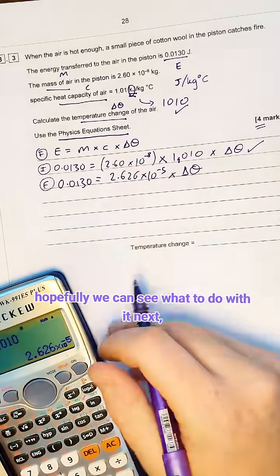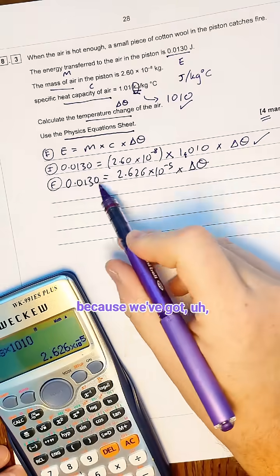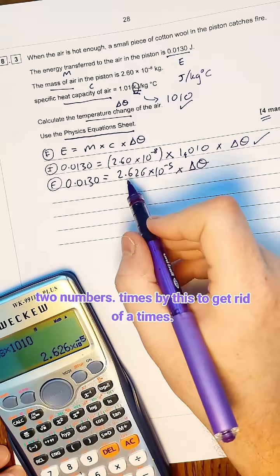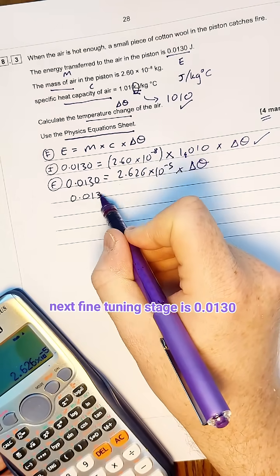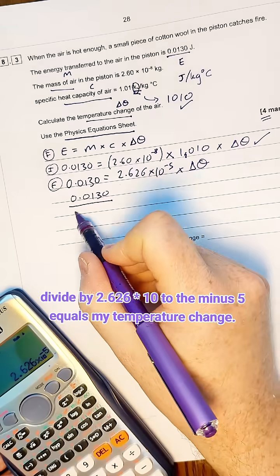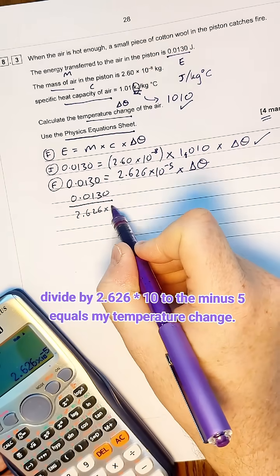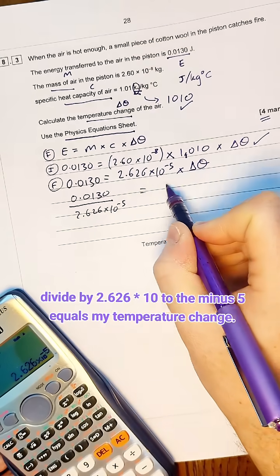Next, hopefully we can see what to do with it next because we've got two numbers times by this. To get rid of the times, I've got to divide. So the next fine-tuning stage is 0.130 divided by 2.626 times 10 to the minus 5 equals my temperature change.